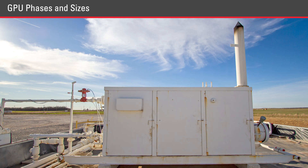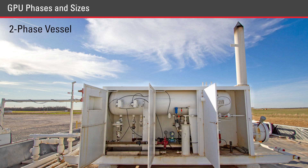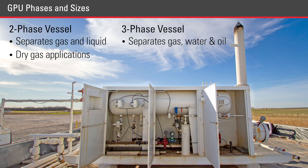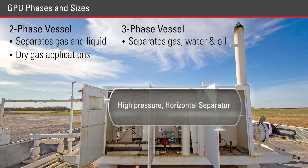A gas production unit can be a two-phase or a three-phase vessel. A two-phase vessel separates gas and liquids and is most often used in dry gas applications. A three-phase GPU separates gas, water, and oil. The separation is accomplished in the high-pressure horizontal separator side of the vessel.